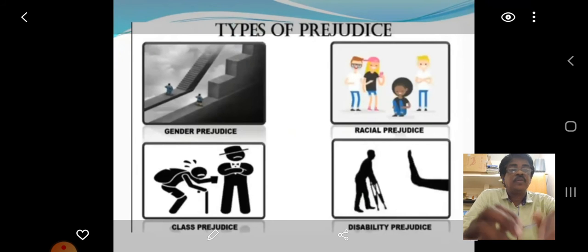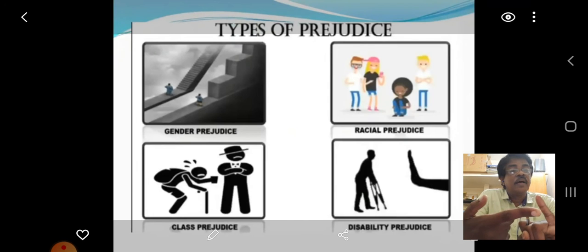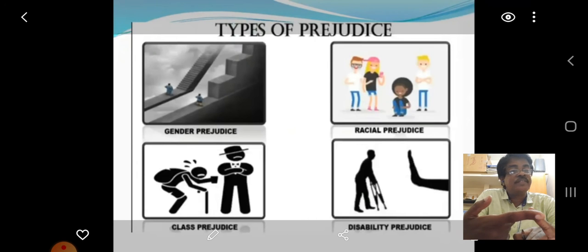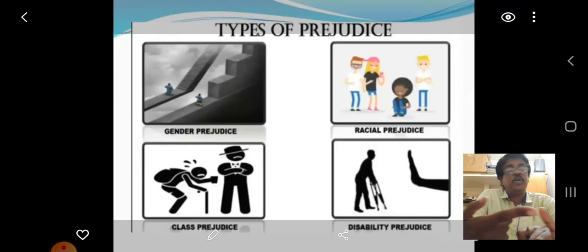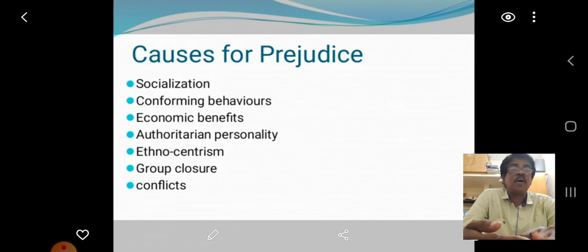So four types of prejudices: Gender Prejudice, Racial Prejudice, Class Prejudice, and Disability Prejudice.